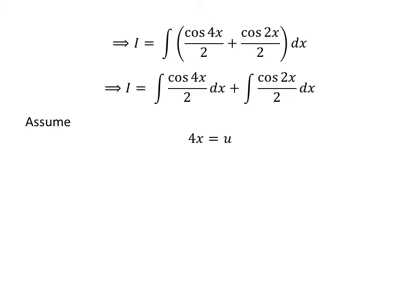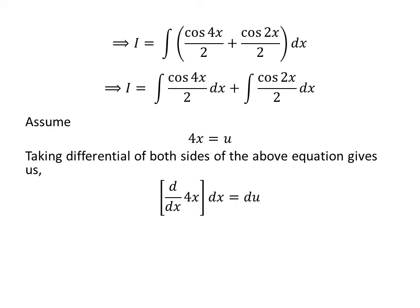Here I have applied the substitution method to solve this integral. Let us assume 4 times x is equal to u. Differentiating both sides gives us the derivative of 4 times x with respect to x, times differential of x, is equal to differential of u. As the derivative of 4 times x is 4, so 4 times differential of x is equal to differential of u. Taking 4 to the right-hand side gives us differential of x is equal to 1 upon 4 times differential of u.